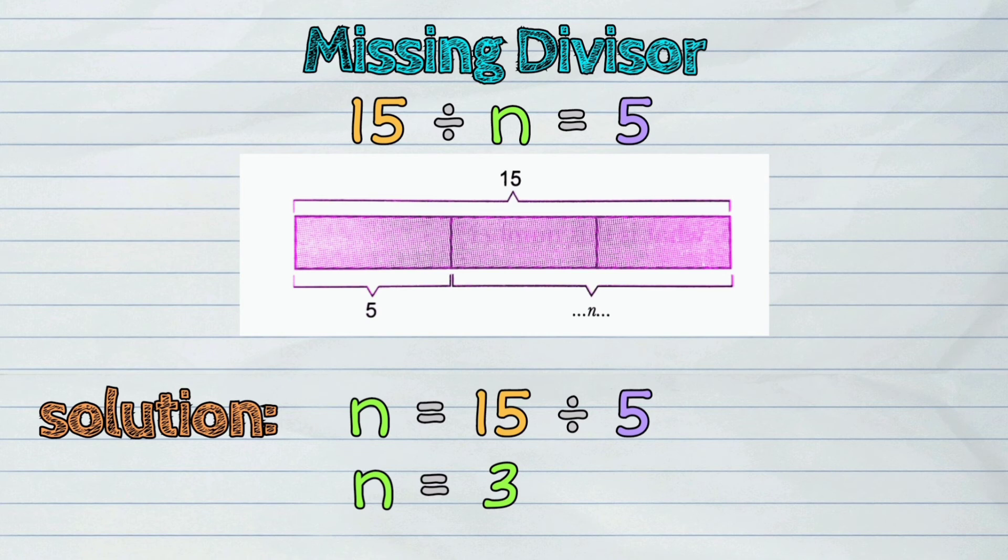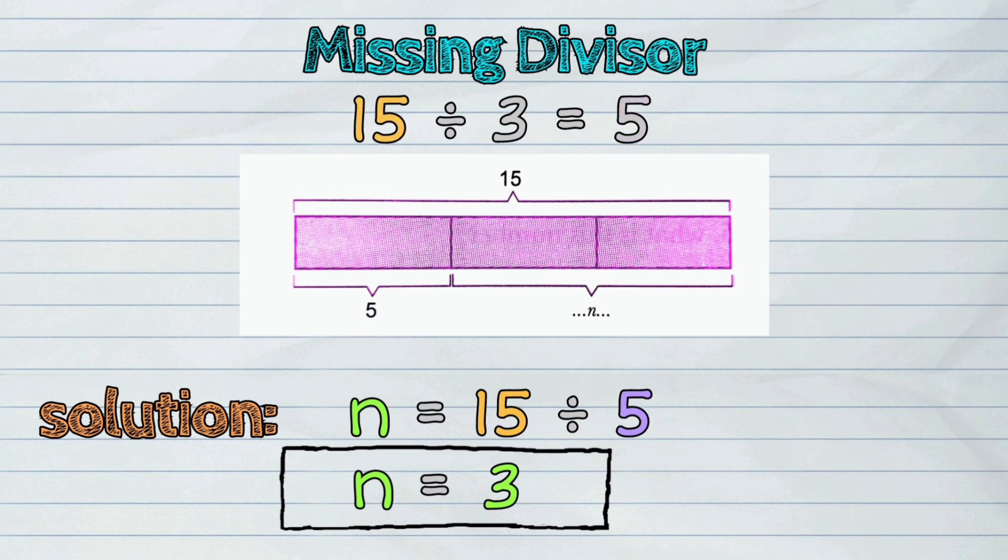Therefore, the missing divisor is 3. So it's 15 divided by 3 equals 5.